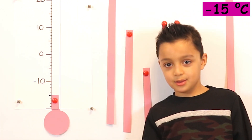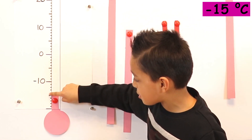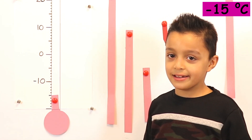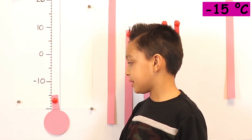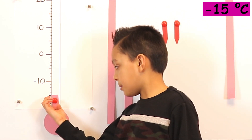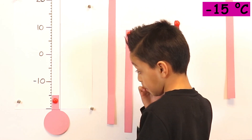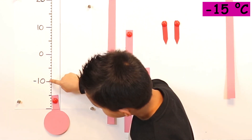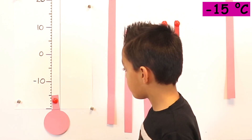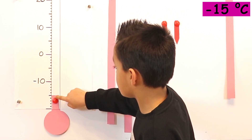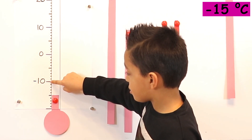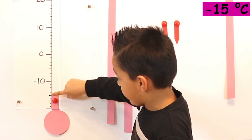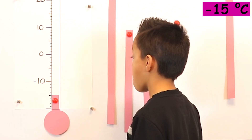Minus fifteen. Can you explain how you know it's minus fifteen? Because this is the halfway point between minus ten and minus twenty. Is there another way we can figure out that it's minus fifteen? We can count on from minus ten because we know it's going in ones. Start at minus ten — minus ten, minus eleven, minus twelve, minus thirteen, minus fourteen, minus fifteen. So that's absolutely correct.